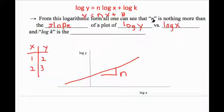We can also get the value of k, which was the number in front of our power function. Remember, our power function is y = kx^n. We can get the value of k by recognizing that the log of k is nothing more than the y-intercept here.